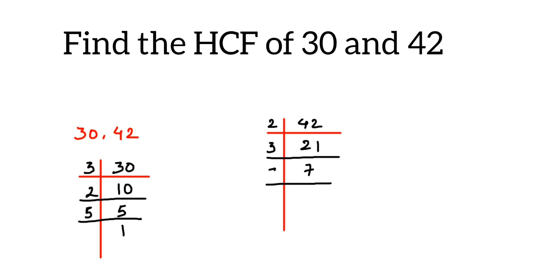Now let's rewrite this. 30 can be written as the product of all these factors: 2 × 3 × 5. And 42 can be written as 2 × 3 × 7. Now once we have this, we have to pair up the common prime factors.